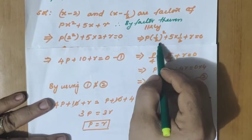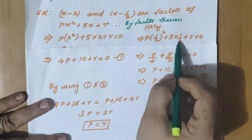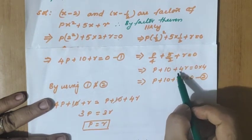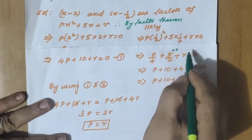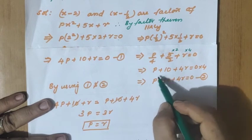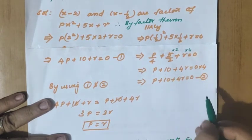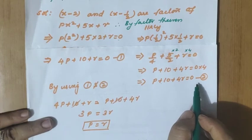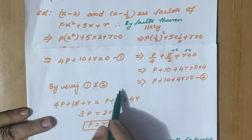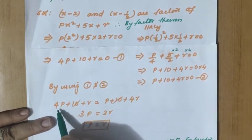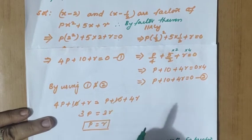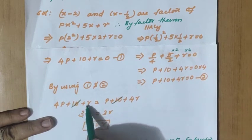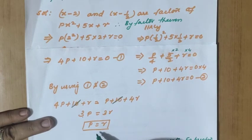For the second factor x minus 1 by 2: substituting x equals 1 by 2 gives p into 1 by 2 whole square plus 5 into 1 by 2 plus r equals 0, that is p by 4 plus 5 by 2 plus r equals 0. Taking LCM 4: p plus 10 plus 4r equals 0. That is equation 2. Since both right-hand sides equal 0, equate equations 1 and 2: 4p plus 10 plus r equals p plus 10 plus 4r. The 10s cancel. Bringing terms together: 3p equals 3r, so p equals r.